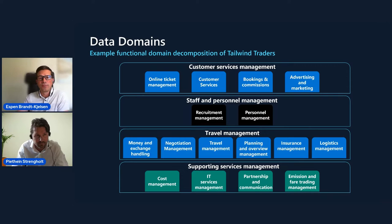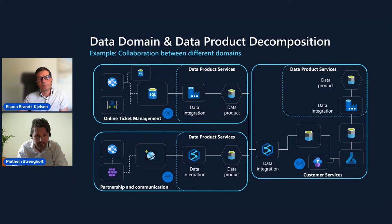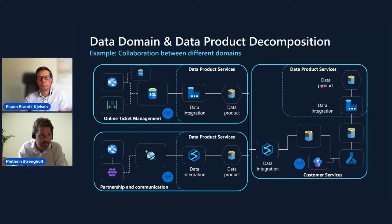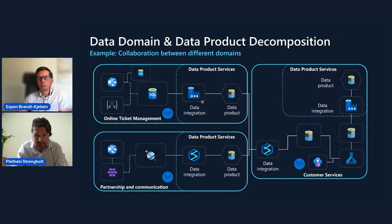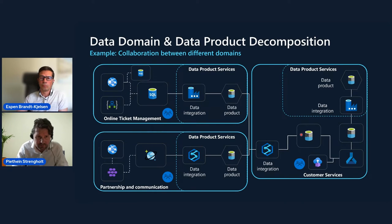Can we look at what this would look like in practice? What you see here on the screen are different domains and also the collaboration between those. On the left, you see a source system aligned domain — transactional operational applications where data is created and managed for the purpose of these operational use cases. You also see a data product service, which is needed for taking the data out of these complex systems and turning it into a data product. On the right-hand side, you see a consuming aligned domain that consumes data from other domains, combines, integrates, and transforms it for their own analytical use case. Such a domain could also create new data and share it again across to other domains. In that respect, a data consumer can also become a data producer.